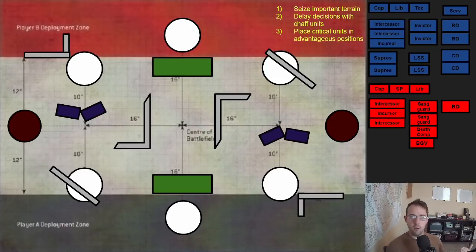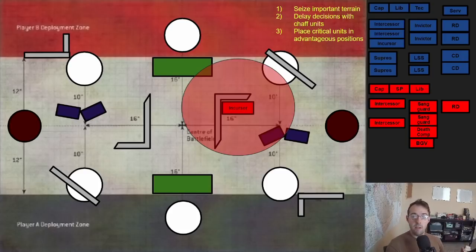My three steps for deploying are: seize important pieces of terrain, delay important deployment decisions by placing chaff units first, and then finally place critical units in advantageous positions. If both players have units like incursors and invictor tactical warsuits that can deploy in the midfield, it's actually very important who gets to deploy first. For example, let's say I end up being selected as a defender, and then I place my unit of incursors in that key ruin that I talked about earlier. Now no enemy can deploy within nine inches of that. So if my opponent went first, they actually could have deployed their incursors or tactical warsuits there and denied my ability to deploy in that ruin.